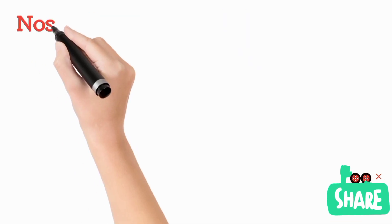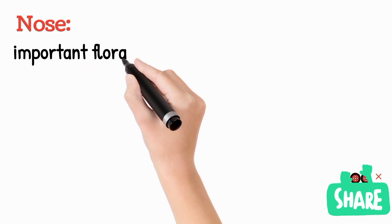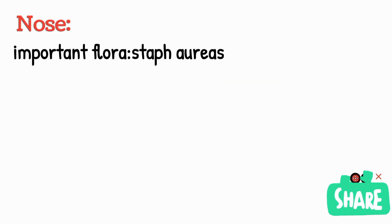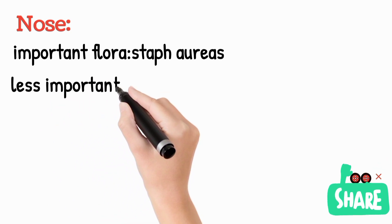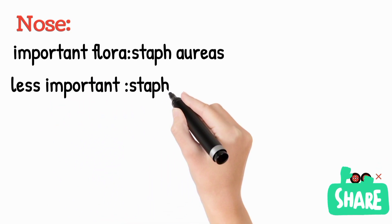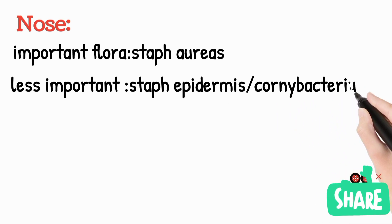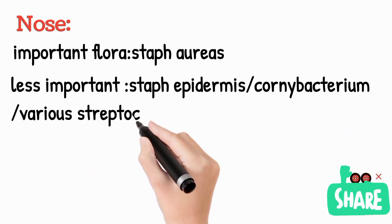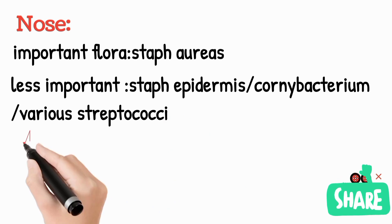The important flora of the nose: Staphylococcus aureus is the most predominant flora of the nose. Less importantly, Staphylococcus epidermidis — which is predominant on skin — Corynebacterium, and various streptococcal species can also be present in the nose.